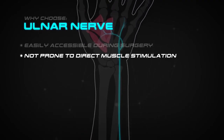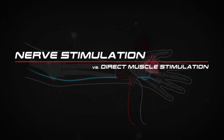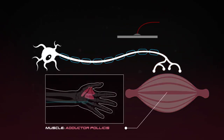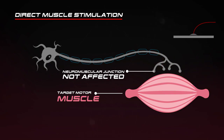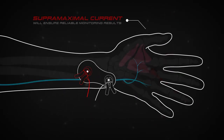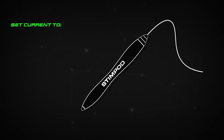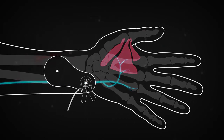In anesthesia, neuromuscular blocking agents may be required to facilitate endotracheal intubation and provide optimal surgical conditions. When neuromuscular blocking agents are administered, neuromuscular function of the patient must be monitored. Neuromuscular function monitoring is a technique that involves the electrical stimulation of a motor nerve and monitoring the response of the muscle supplied by that nerve.